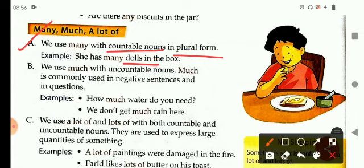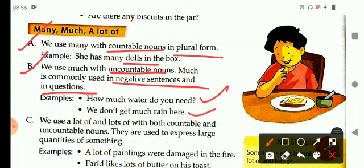We use much with uncountable nouns. Much is commonly used in negative sentences and in questions. For example, how much water do you need? This is used with a question. We don't get much rain here. Here, much is used in a negative form, meaning no.